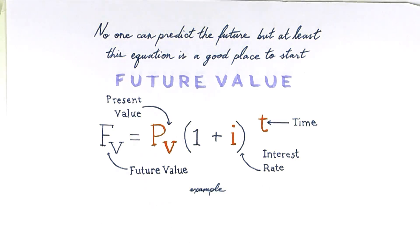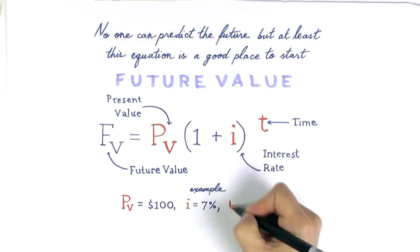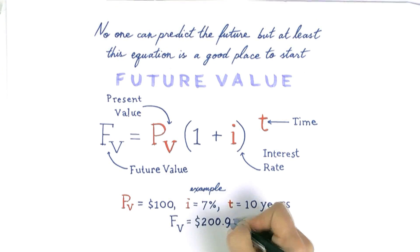For example, if you have a hundred dollars and you're able to invest it with an average annual increase of seven percent, after 10 years you'll have 200 bucks.